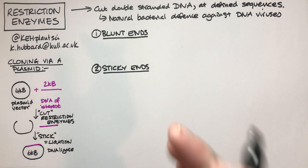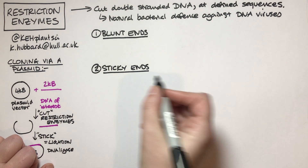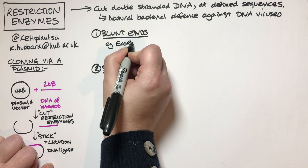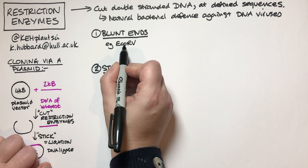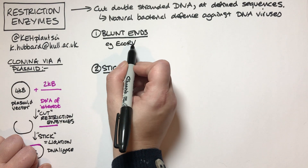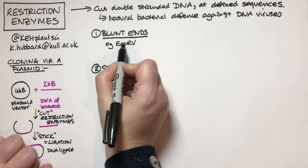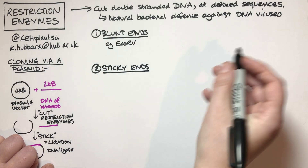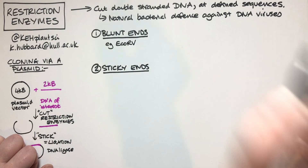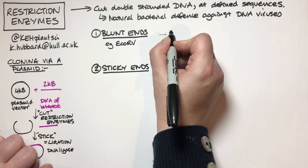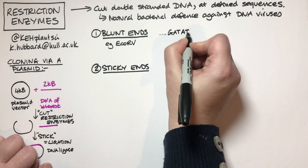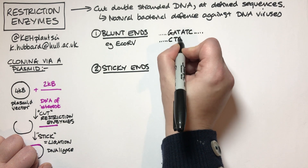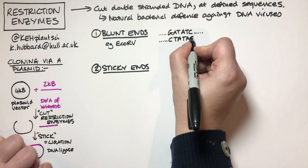Each different enzyme recognizes a different sequence. For example, a blunt end enzyme is EcoRV — they all have these funny names like EcoRV, EcoRI, BamHI; the first bit tells you which bacteria it was identified from. EcoRV recognizes the specific site: the sequence GATATC, which on the other strand of DNA will be CTATAG.